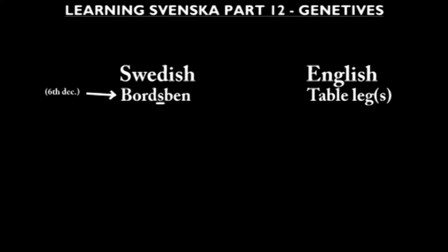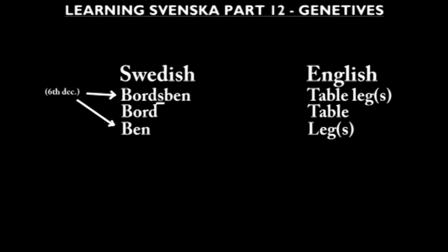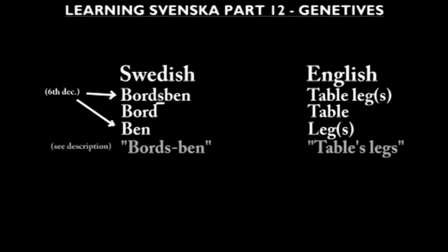The genitive S also helps us explain some of the mysterious S's that show up in compound words. For example, the word 'bordsben' is a compound word of the words 'bord' and 'ben'. Where did the S come from? Well, now it's quite easy to see that the S is there to denote that the table is possessive of the legs — it's the legs of the table. Bordsben.